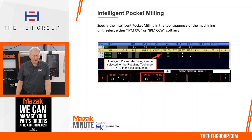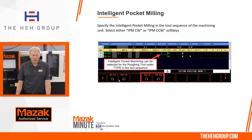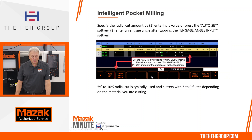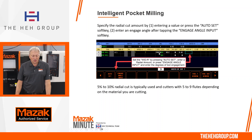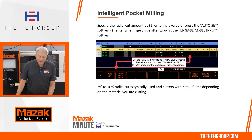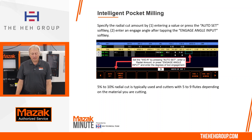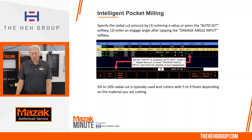We still have the standard features of clockwise and counterclockwise cut — we typically use those for the finish operation. Once you've chosen IPM counterclockwise under type, the other selection to make is the width R, where you specify the radial amount of cut you want to take with the cutter.